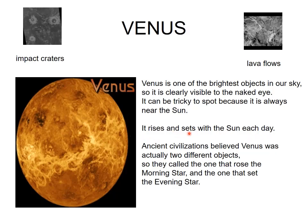Venus rises and sets with the Sun each day, so every day you can see it in the very early morning — we call it the morning star. At sunset, we also see it and call it the evening star. Ancient civilizations believed Venus was actually two different objects, naming the one that rose the morning star and the one that set the evening star.